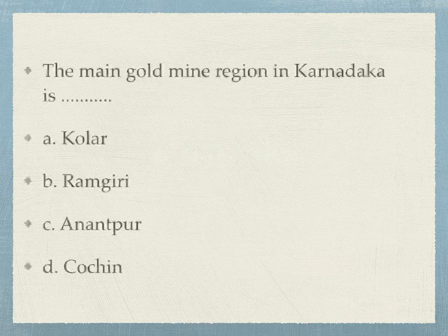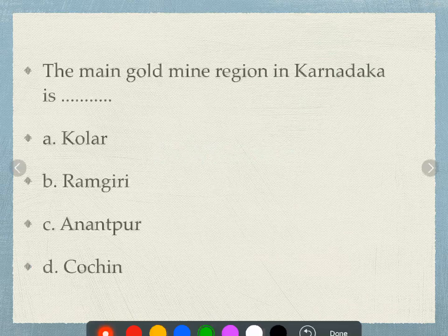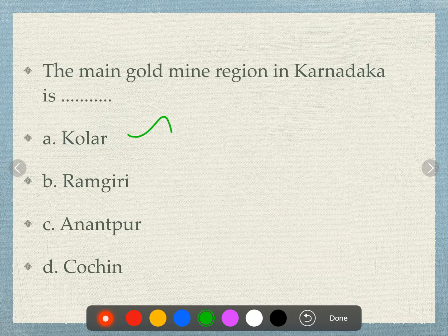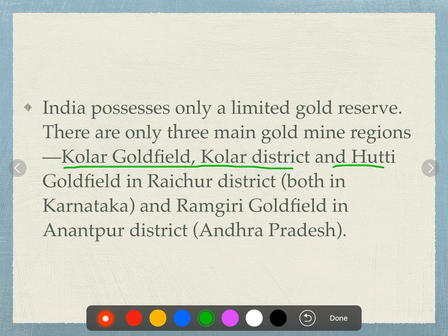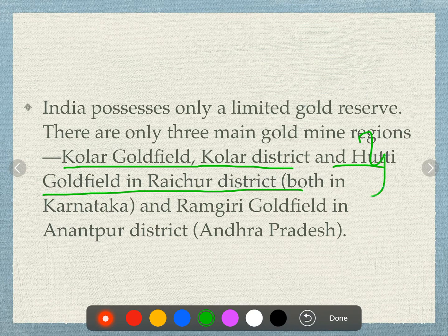The main gold mine regions in Karnataka are Kolar, Ramgiri, and Anandpur. In India, there are limited gold reserves. We are going to talk about the Kolar gold field in Kolar district and the Hutti gold field in Raichur district, both in Karnataka. We will also talk about the Ramgiri gold field in Anandpur district.